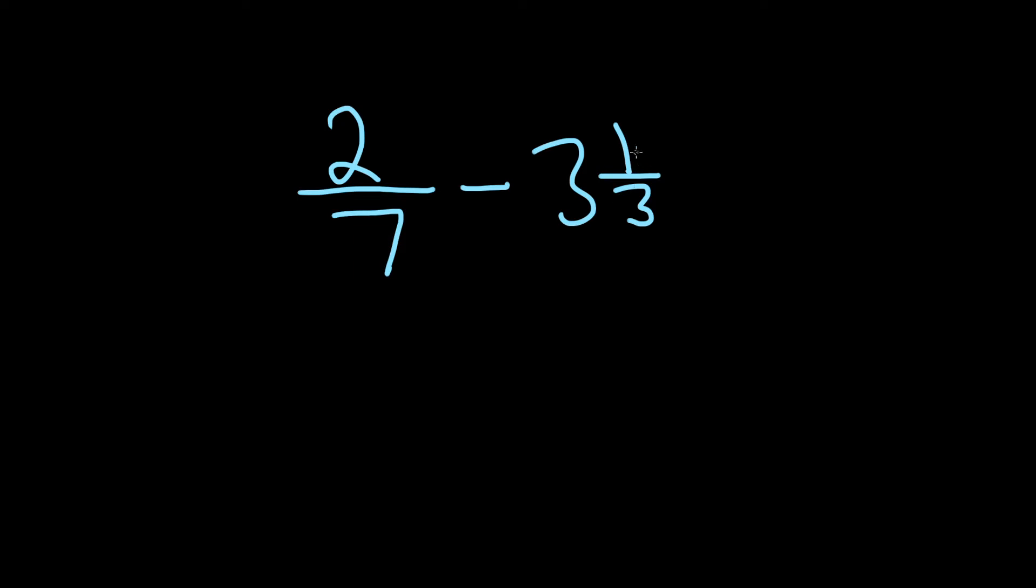So the very first step in this problem is to convert this mixed fraction into what's called an improper fraction. So 2 over 7, we'll keep that, so 2 over 7 minus, and then to convert this, you basically multiply these numbers. So 3 times 3, that gives you 9, and then you add 9 plus 1, so that's 10, and then you write it over this number here on the bottom, so 3. Again, 3 times 3 is 9, 9 plus 1 is 10.